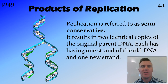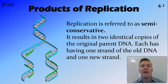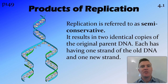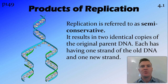The process of replication is referred to as semi-conservative. The reason we call it semi-conservative is that it results in two identical copies of the DNA, and each of those copies has one strand from the original DNA and one new strand. So half of the DNA from that original strand is conserved and split between the two new strands.